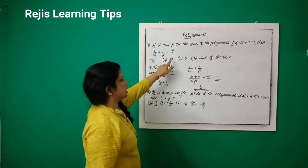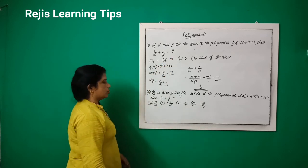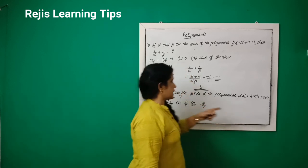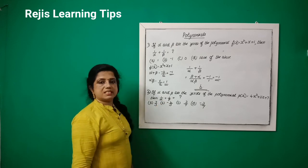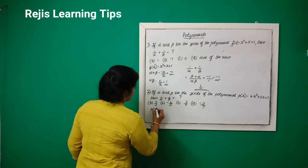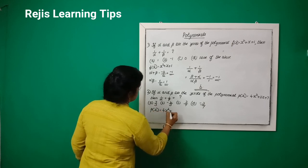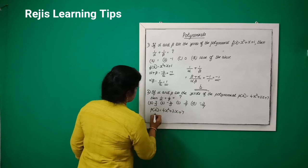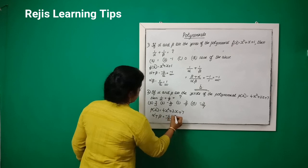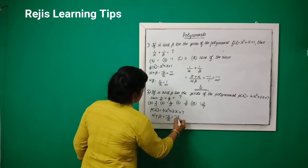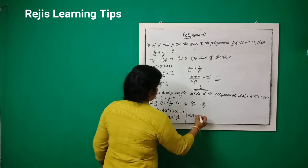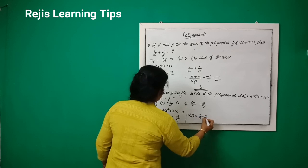Now the second question: if alpha and beta are the zeros of the polynomial p(x) = 4x² + 3x + 7, then 1/α + 1/β is equal to? The sum of zeros α + β = -b/a = -3/4. The product of zeros α·β = c/a = 7/4.